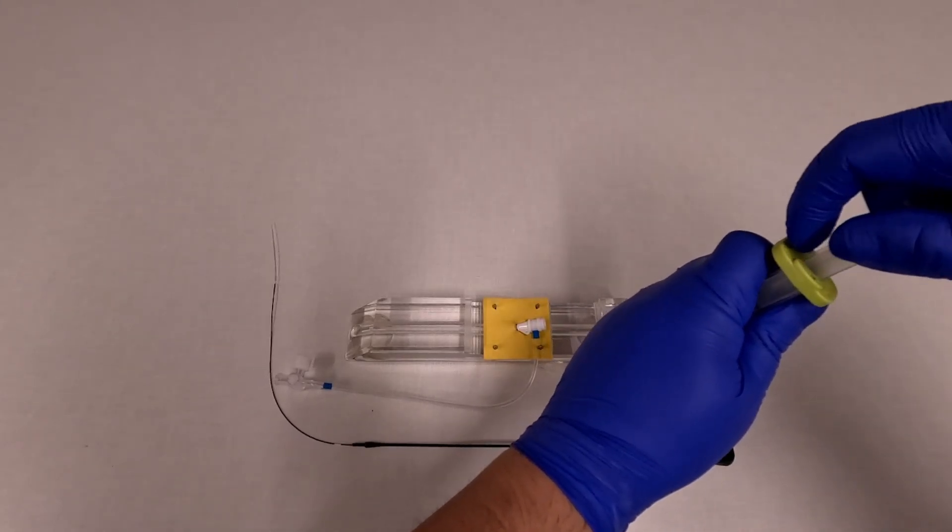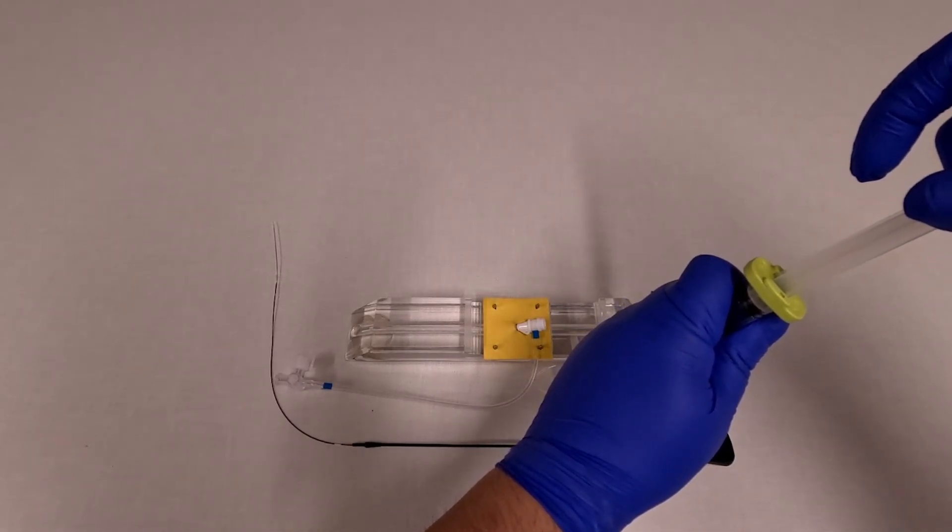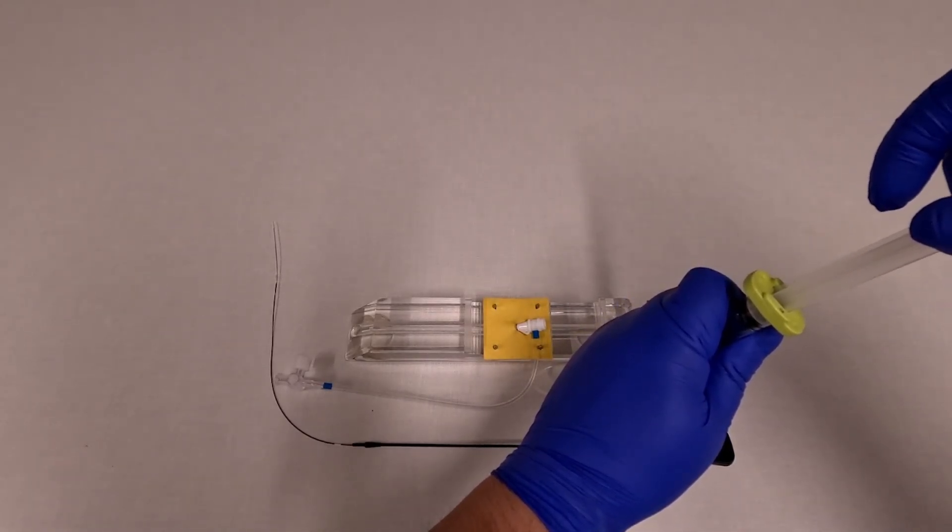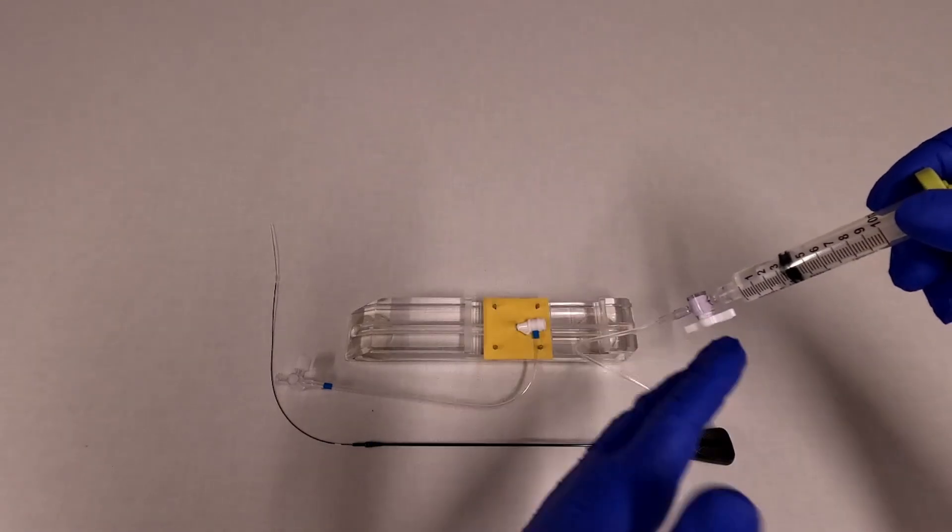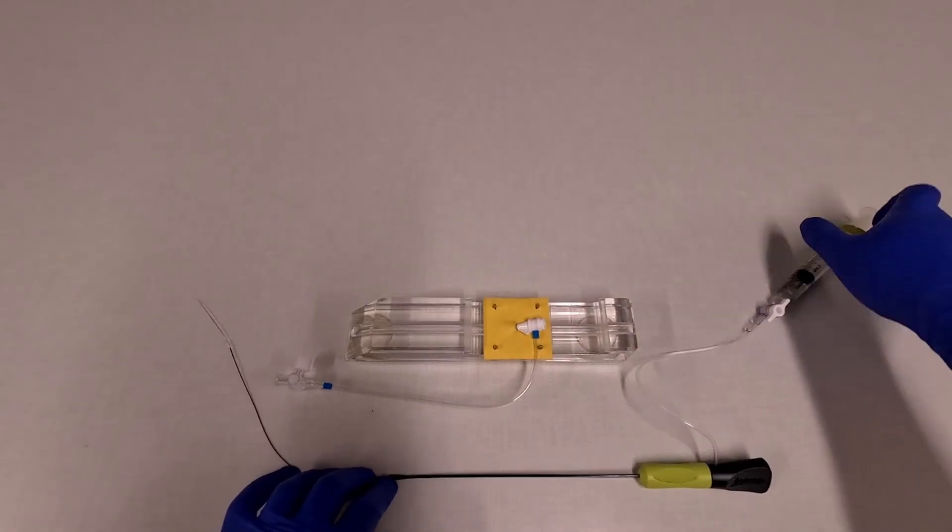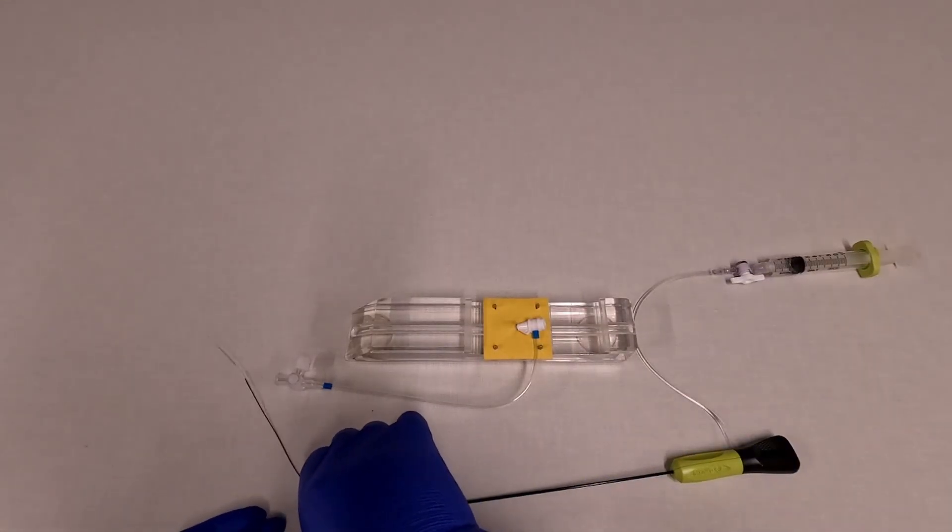Then we just pull back on the syringe to make sure that the balloon is collapsed. You don't need to lock it. You can just leave the syringe in its neutral position. Now the device is ready to deploy.